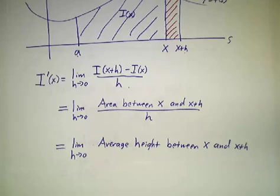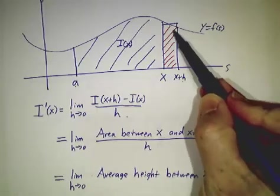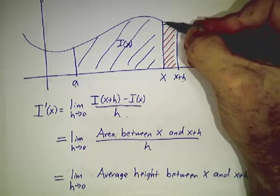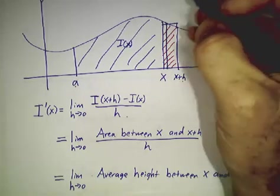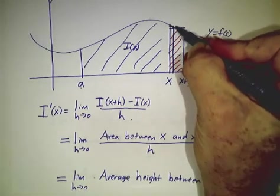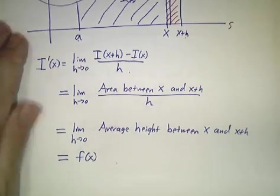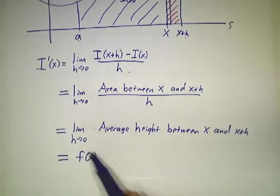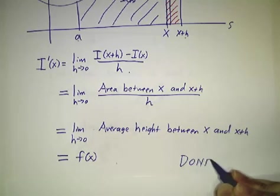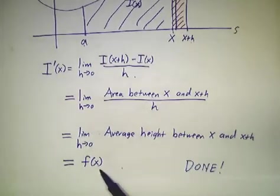Now, if you have a continuous function, the average height between x and x plus h, it doesn't have a chance to change by very much. The average height is going to be close to f(x). And if you make h really small, then f doesn't change very much in here. And so the average is going to be very, very close to f(x). The smaller you take h, the closer you get to f(x). So as h goes to 0, the average goes to f(x) and we're done. The derivative of the running total is the function itself.